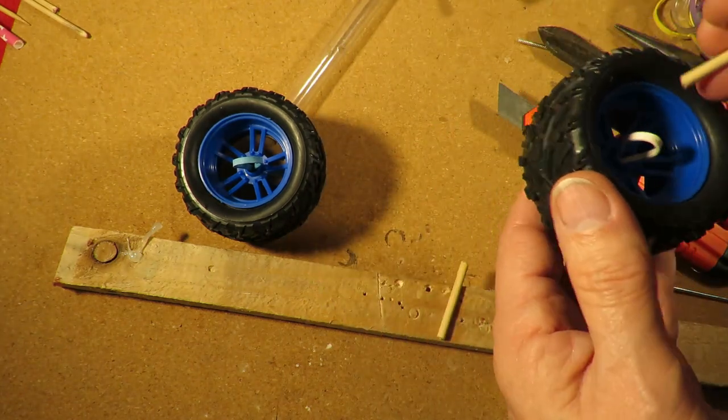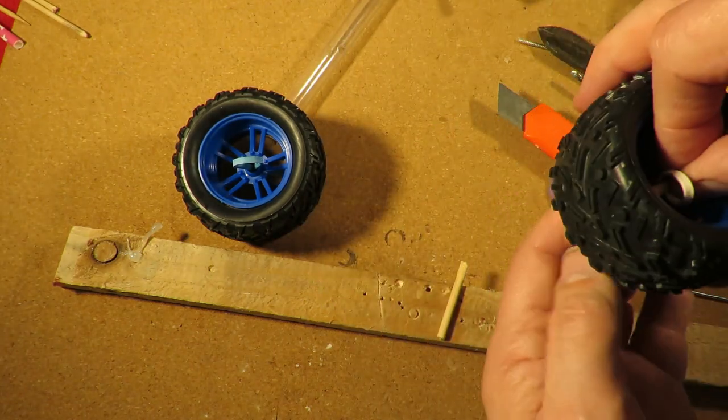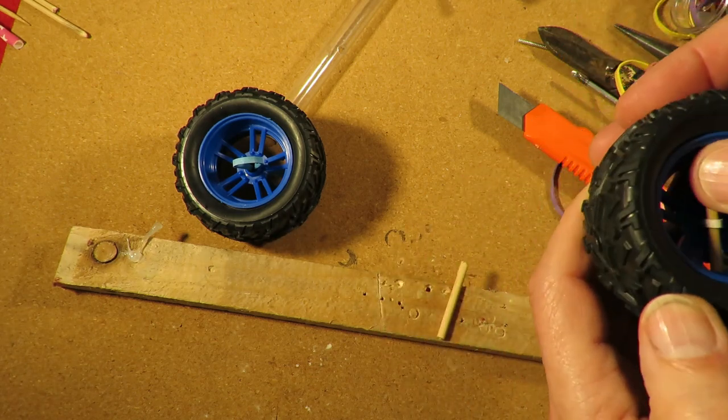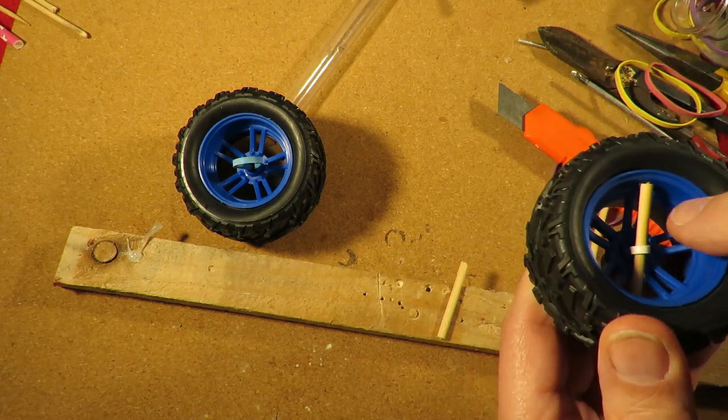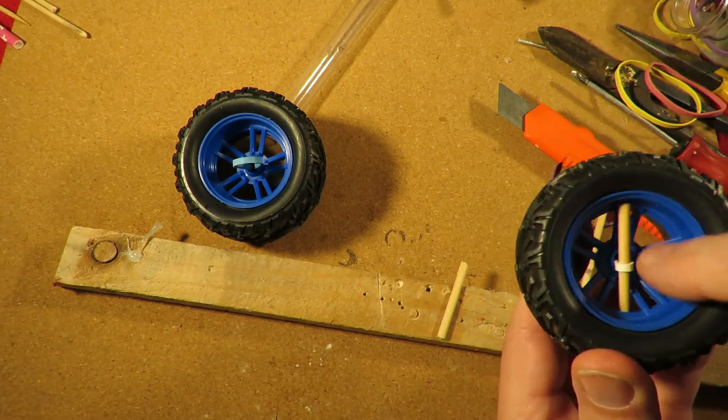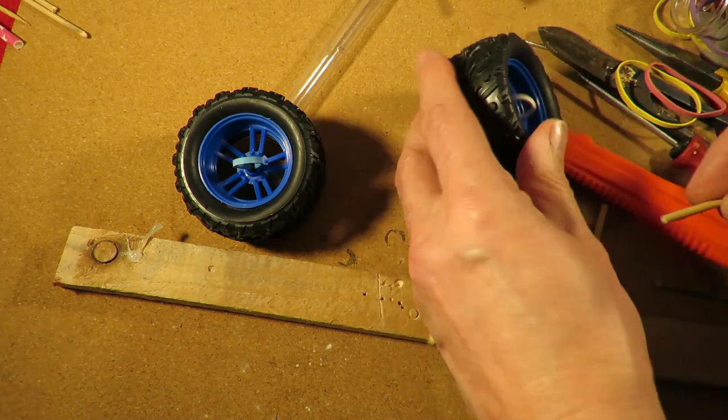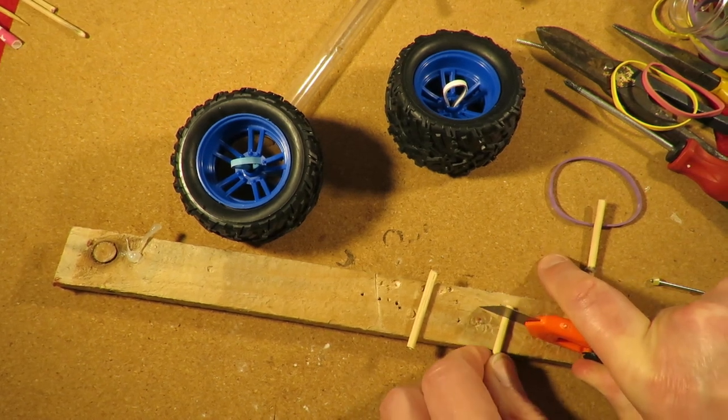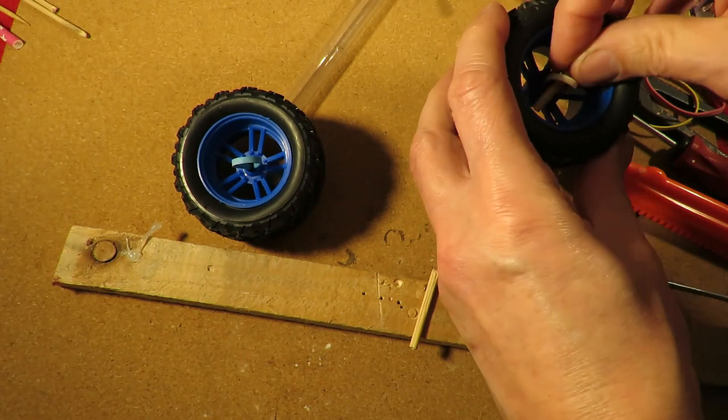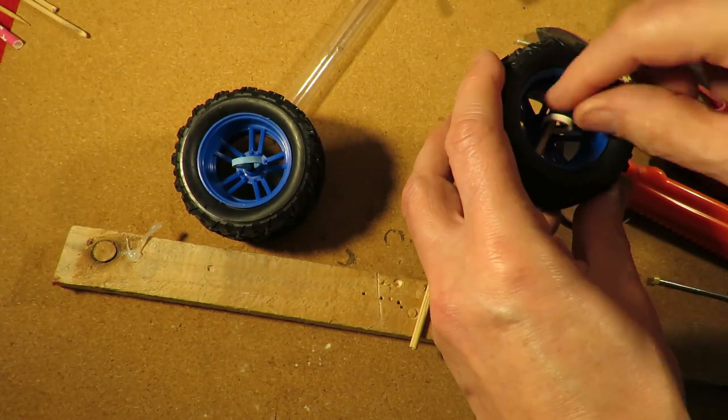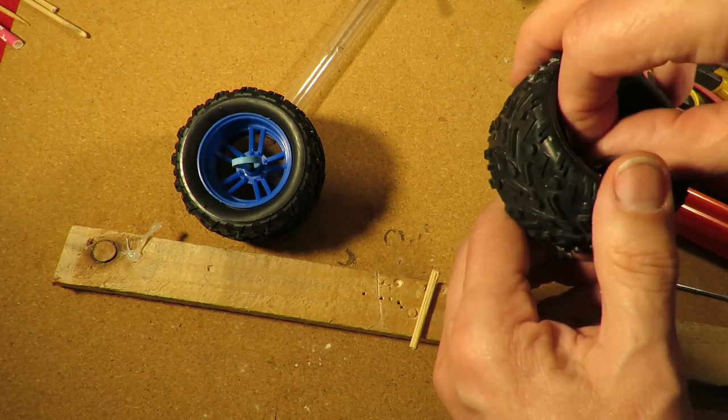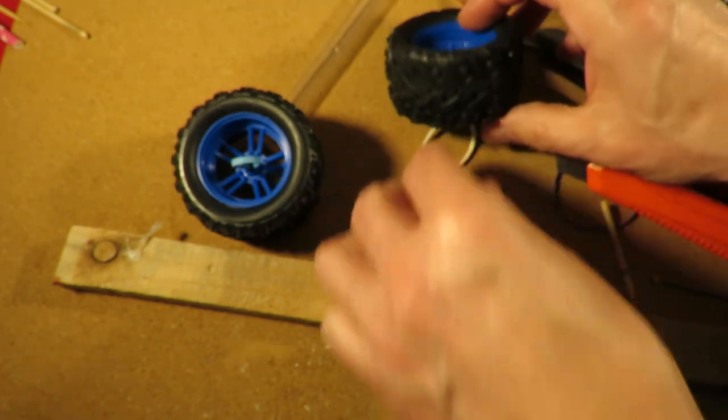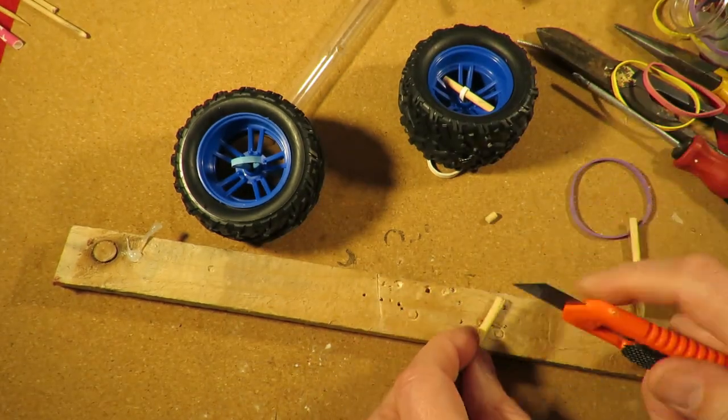So that's going to go in there. If I made that a bit shorter, it'll actually go in between the spokes there. Yeah, that should help it grip. Shorten that one as well.